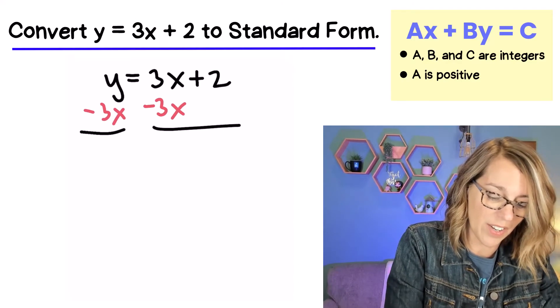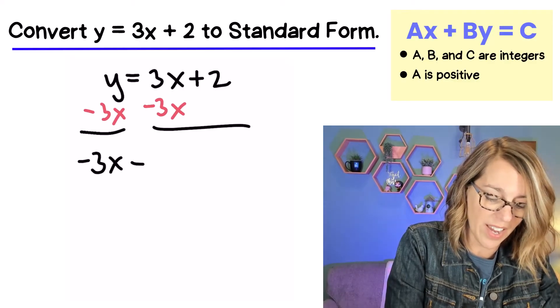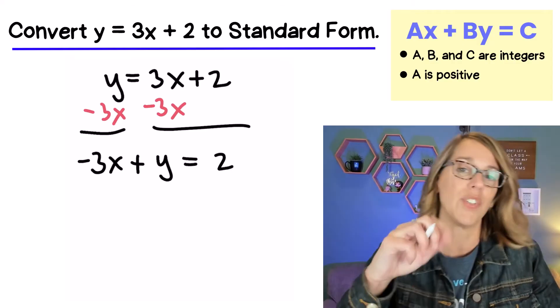That's going to give us, I'm going to write the x term first, so negative 3x plus y is equal to 2.